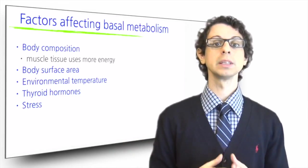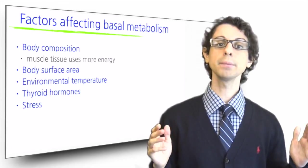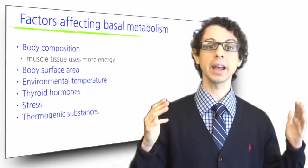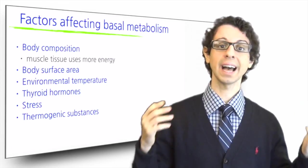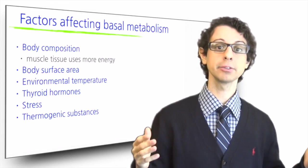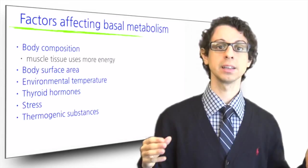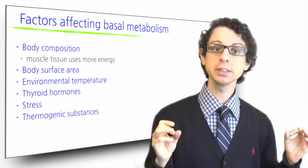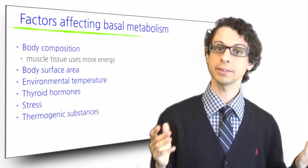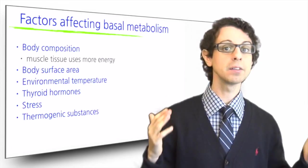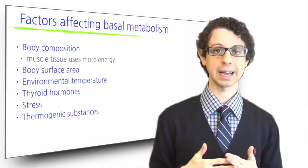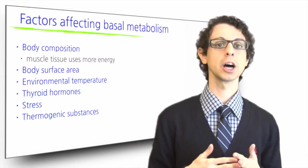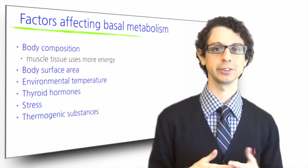Our basal metabolism can also be increased by thermogenic substances—that is, substances which increase our energy expenditure—such as caffeine, nicotine, ephedra, capsaicin, and drugs such as amphetamine and ephedrine. For this reason, coffee, green tea, red peppers, or ephedra tea have been used to help in many weight loss diets. Cigarette smoking is another option, but it is definitely not a smart way to induce thermogenesis.